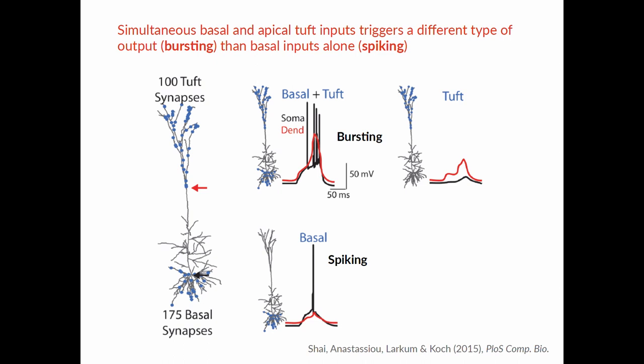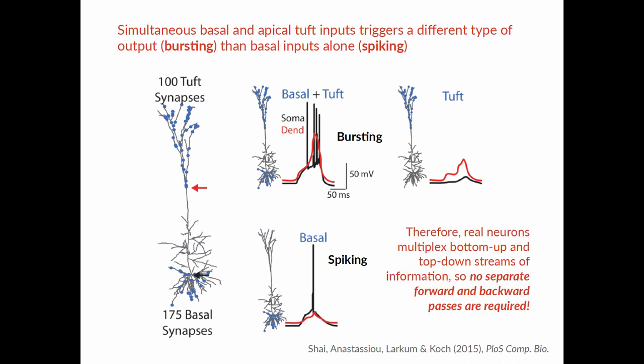Well, it turns out that by separating the inputs like this, these neurons end up giving different outputs depending upon whether or not the basal dendrites have been activated or the apical tuft dendrites. So here you're looking at a biophysical simulation of one of these neurons with synaptic inputs shown in blue dots on the basal dendrites and the tuft dendrites. If you receive inputs to just the tuft dendrites, which is shown on the bottom here, you get what's known as one of these spikes, a little impulse that the neuron sends out to all its buddies. If, however, the neuron receives a combination of basal inputs and apical tuft inputs, then it elicits a burst of impulses. And this burst of impulses can have very different effects downstream depending upon which types of neurons are listening to it. What's interesting about this is that real neurons multiplex their bottom-up and top-down signals. These impulses that they're sending out are effectively carrying two separate streams of information. And what that means is that you don't need separate forward and backward passes.